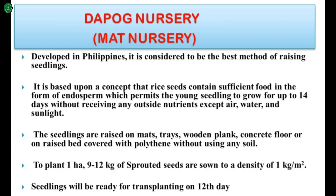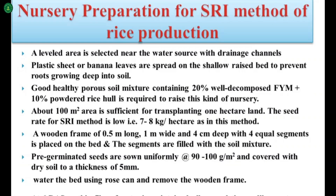Seedlings from one square meter area are sufficient for a 200 square meter field. Nursery preparation for the SRI method of rice production: a leveled area is selected near a water source, and channels are developed for drainage so that excess water can easily drain out.